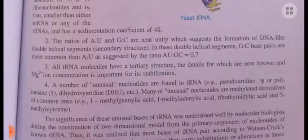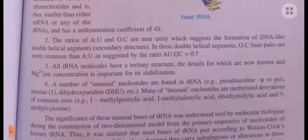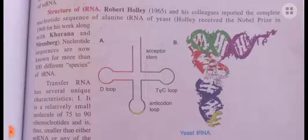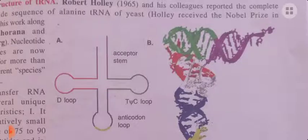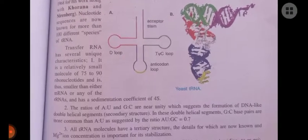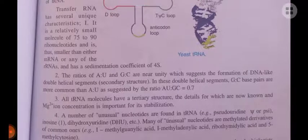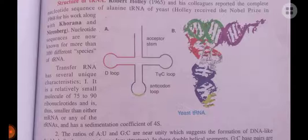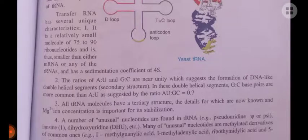The third unique feature is that all tRNA molecules have a tertiary structure, and magnesium ion concentration is important for its stabilization. The three-dimensional structure is stabilized not only by hydrogen bonding between ribonucleotides but also by magnesium ions. Previously, the secondary structure was drawn as the cloverleaf model, and now the three-dimensional structure has also been determined. The amino acid attachment side is shown in the 3D figure, and magnesium ions are required for its stabilization.